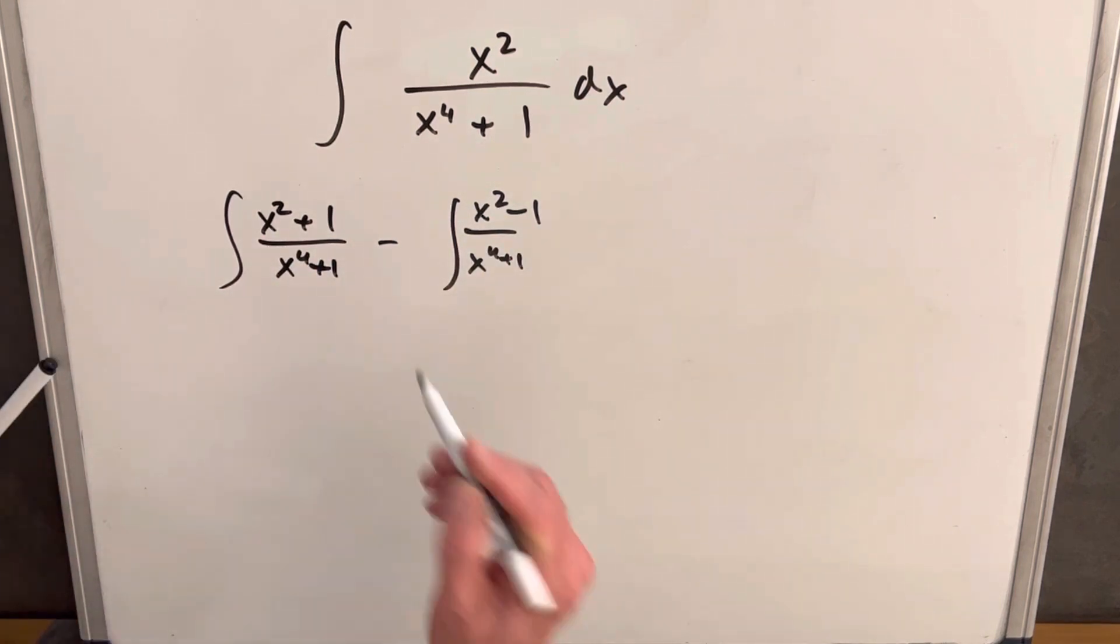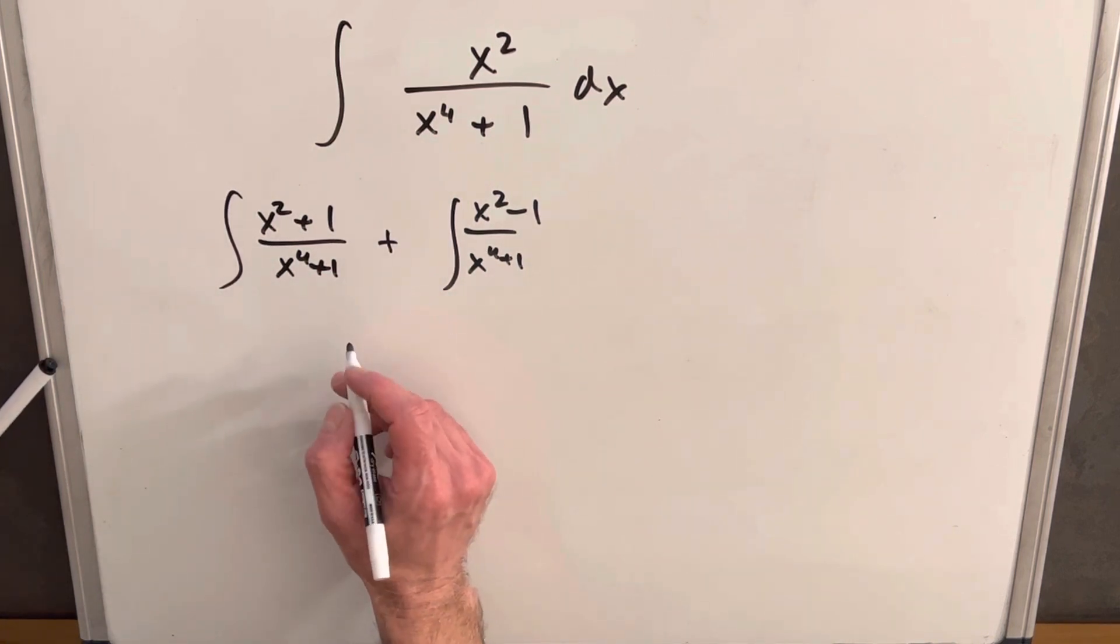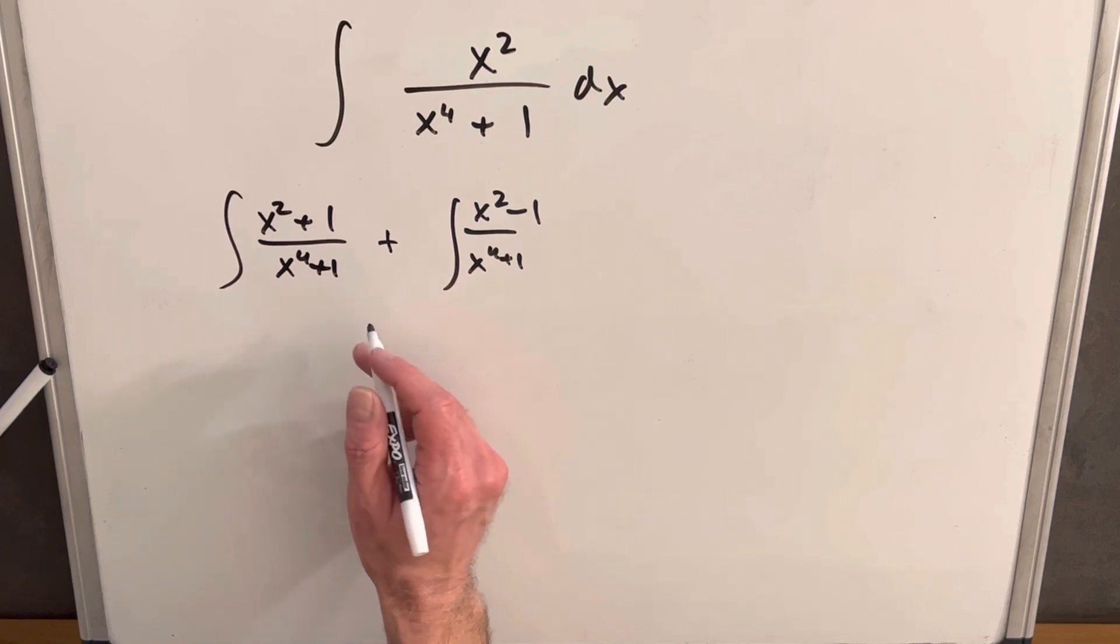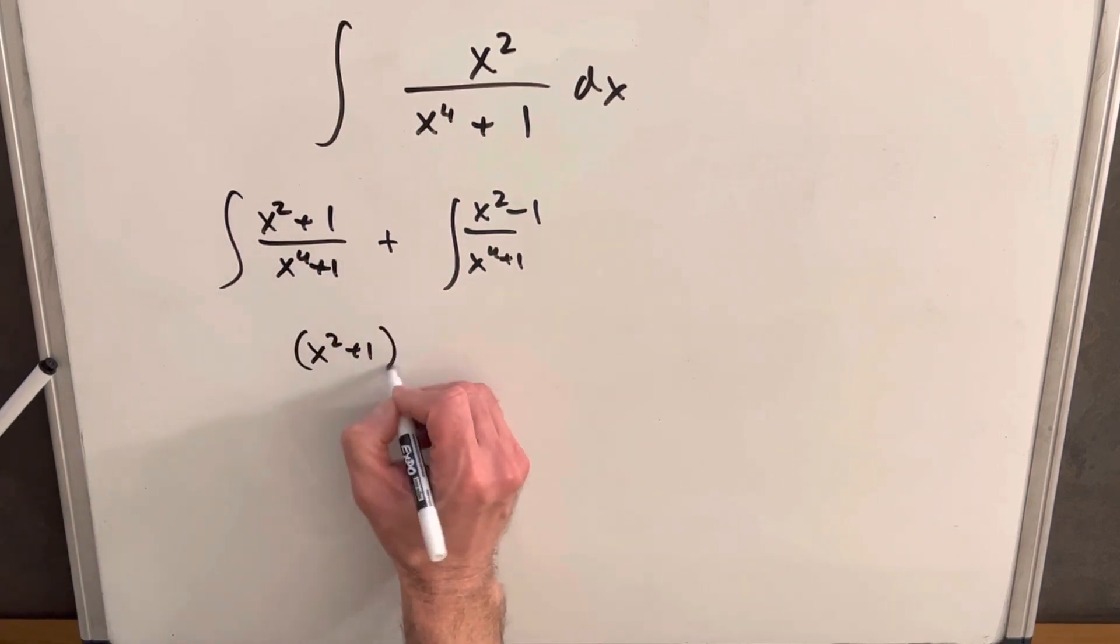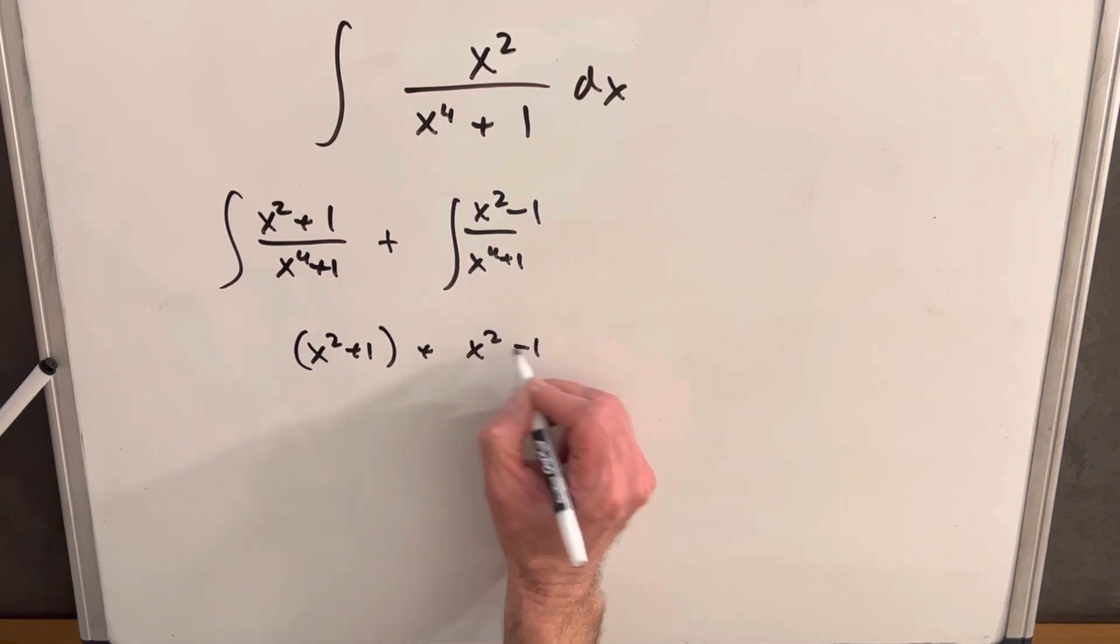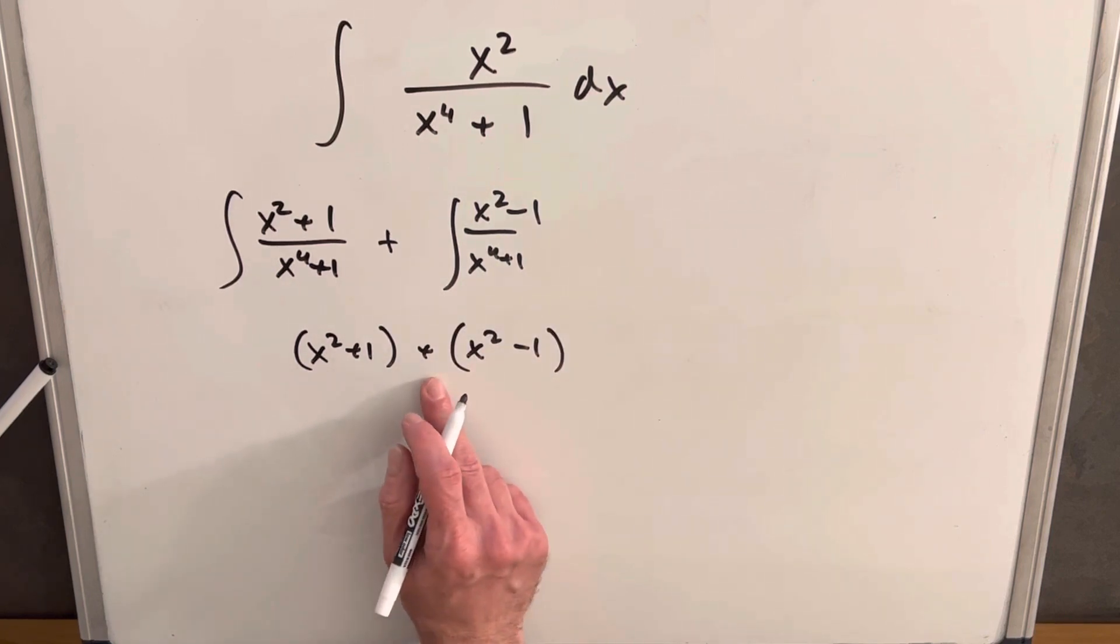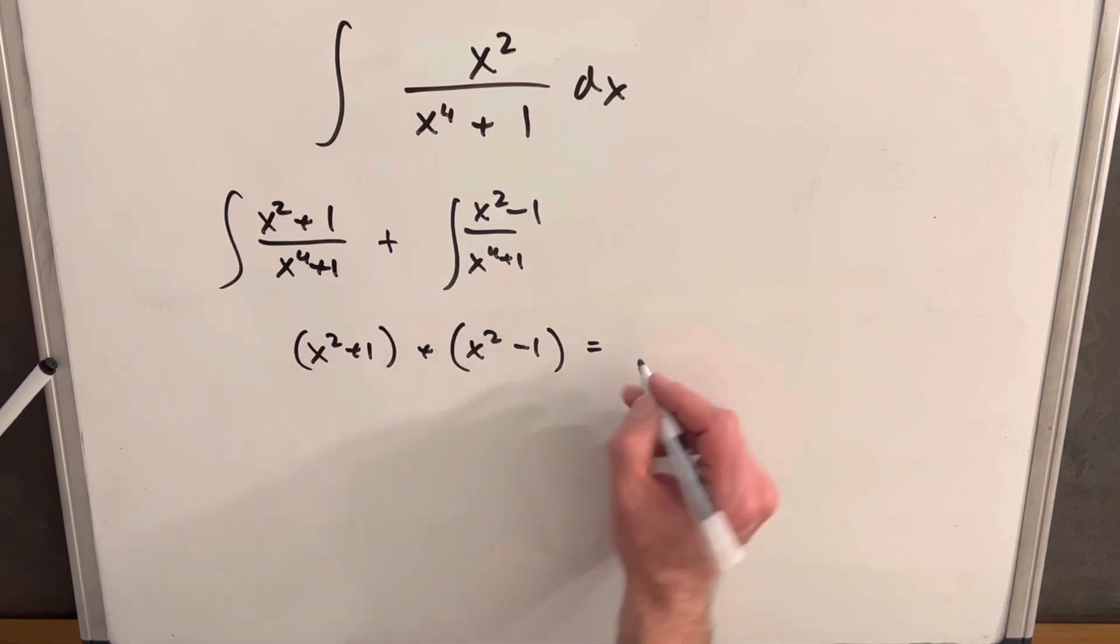I can change this pretty easy. Let's just make this minus into a plus, and then let's see what happens. If we add x squared plus 1 to x squared minus 1, we end up with 2x squared, and the 1s cancel.